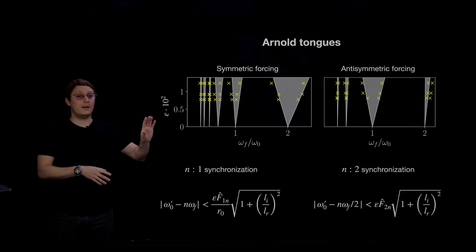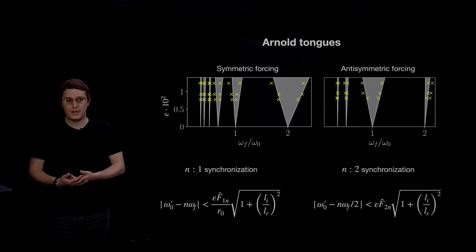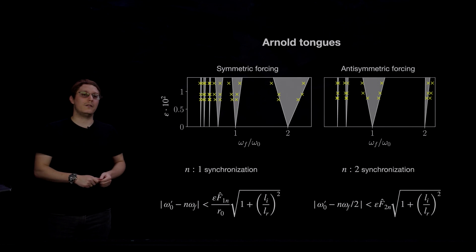And as you can see, the response of the wake in regards to synchronization is quite different when using symmetric forcing or antisymmetric forcing. And I might add that we can also use these expressions to enforce known physics on our model. Because we have available measurements of the synchronization bounds, we can use these expressions to solve for what the model coefficients need to be, such that by construction, our model respects the synchronization dynamics of the measured system. And this is a very exciting research direction that we want to look further into in the future.